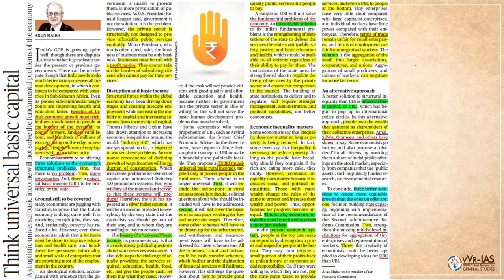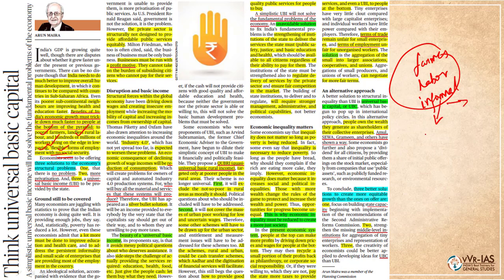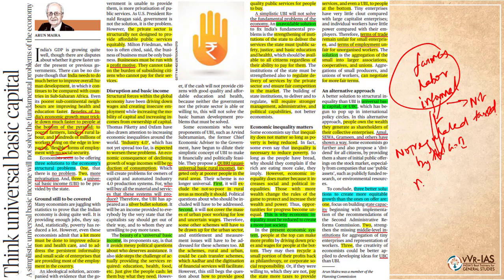Those at the bottom of the pyramid are the poor farmers, the landless rural laborers, and the hundreds of millions of workers living on the edge in low-paying, flexible forms of employment with no social security. The informal sector is basically that which is not regulated by the government; moreover, the wages here are not taxed. Most Indian workers are employed in the informal sector.